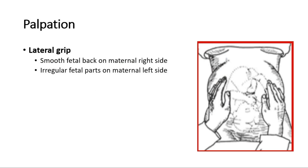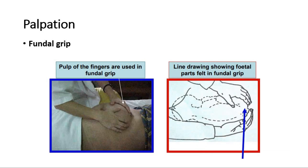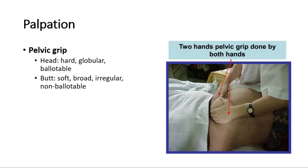For palpation, we perform lateral grip, fundal grip, and pelvic grip. In the lateral grip, you can feel for the fetal back and fetal parts. A smooth fetal back will be felt on the maternal right side, whereas irregular fetal parts are felt on the maternal left side. In the fundal grip, the pulp of the fingers is used to palpate for the fetal pole. After the fundal grip, the pelvic grip is performed to palpate for the head and buttock of the fetus. The head will feel hard, globular in shape, and ballottable, whereas the buttock will feel soft or firm, broad, irregular, and non-ballottable.